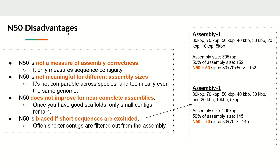N50 has additional disadvantages. It only tells us about sequence continuity — how continuous the sequence is — but does not indicate whether the assembly is correct. There may be many misassemblies, but N50 will not reveal them. Also, N50 is not meaningful when comparing assemblies of significantly different sizes. Furthermore, N50 does not improve for near-complete assemblies because once most scaffolds are large, only small contigs remain.